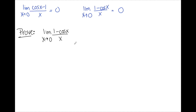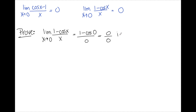Now we have two more formulas to look at. The first is the limit as x approaches 0 of cosine x minus 1 over x, which equals 0. And the limit as x approaches 0 of 1 minus cosine x over x is also equal to 0. We're going to prove this second one. If I plug in 0, I get 1 minus cosine of 0 over 0. Since cosine of 0 is 1, that gives 1 minus 1 equals 0, so I have 0 over 0 — an indeterminate form — meaning we need to do more math to figure out this limit.